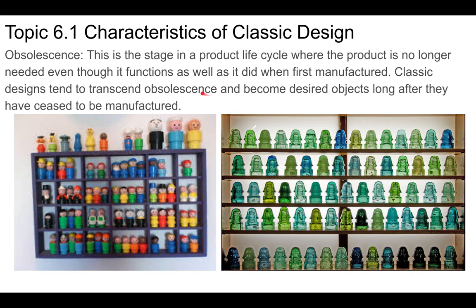Obsolescence is a stage in a product life cycle where a product is no longer needed even though it still functions. Classic design tends to transcend obsolescence — it doesn't go away and can be desired long after it ceases to be manufactured. Glass insulators used on overhead electrical wire poles are one example: they're obsolete now, replaced by better ceramics, but people still collect them as a classic design.